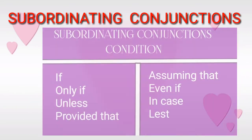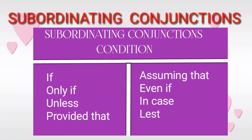The subordinating conjunctions of condition are: 'if,' 'only if,' 'unless,' 'provided that,' 'assuming that,' 'even if,' 'in case,' and 'lest,' etc. We will discuss each one separately with examples.